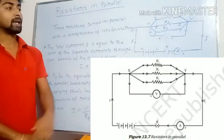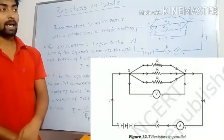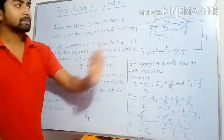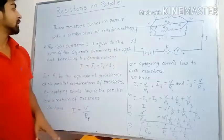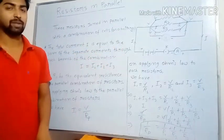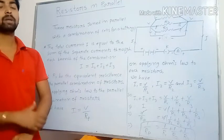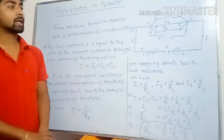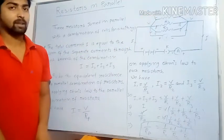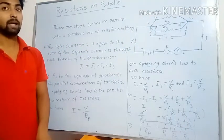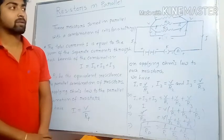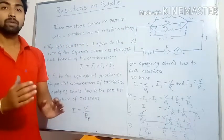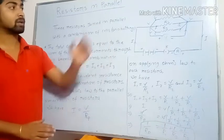Let students note that current I is flowing through this circuit, and this circuit contains cells and a battery. It means the resistors are joined in parallel with a battery. So, what will be the electric current for these three resistors, what will be the potential difference, and what will be the equivalent resistance for this combination?